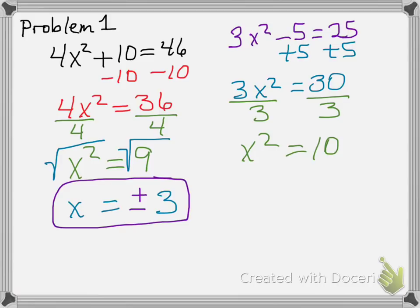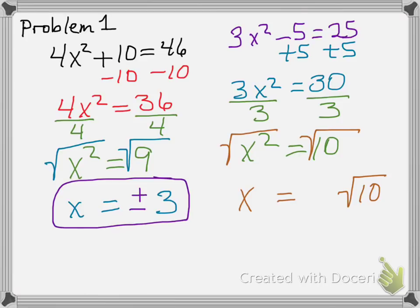I've got x squared, so I need to get rid of the square by taking the square root of both sides. The square root of x squared is x, and that equals the square root of 10. If it's not a whole number, leave it under the radical sign. If I want you to do decimals, I'll say so. And just like with 3, the square root of 10 can be either positive or negative.